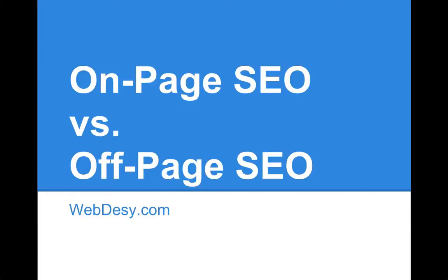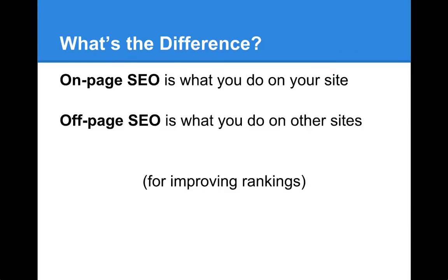Welcome back to SEO Crash Course for WordPress users. This video is about on-page SEO and off-page SEO. You'll learn what's the difference and what you need to care about for the most part. On-page SEO is basically what you do on your site to improve rankings, whereas off-page SEO is what you do on other sites to improve your search engine rankings. Now let's take a closer look at each of them.